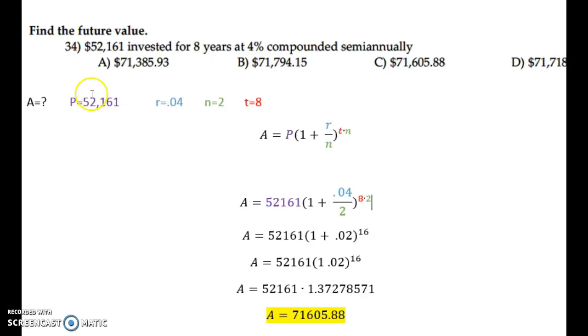So plug all those numbers in where they belong, and then start reducing. So 0.04 divided by 2, and then 8 times 2 equals 16. Add those numbers together, and then take that number, 1.02, and raise it to the 16th power.